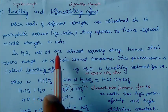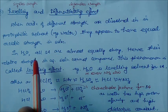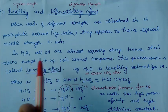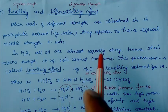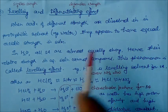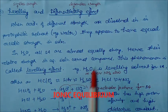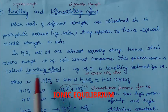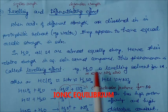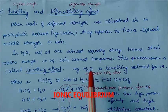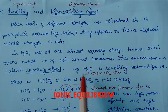In water, all strong acids — HCl, HClO4, HCl3 — their strengths are almost equally strong. Their relative strength in aqueous solvent cannot be compared due to equal strength. This phenomenon is called the leveling effect. Here water is acting as a leveling solvent for strong acids. Even ammonia also acts as a leveling solvent; both water and ammonia show the leveling effect.